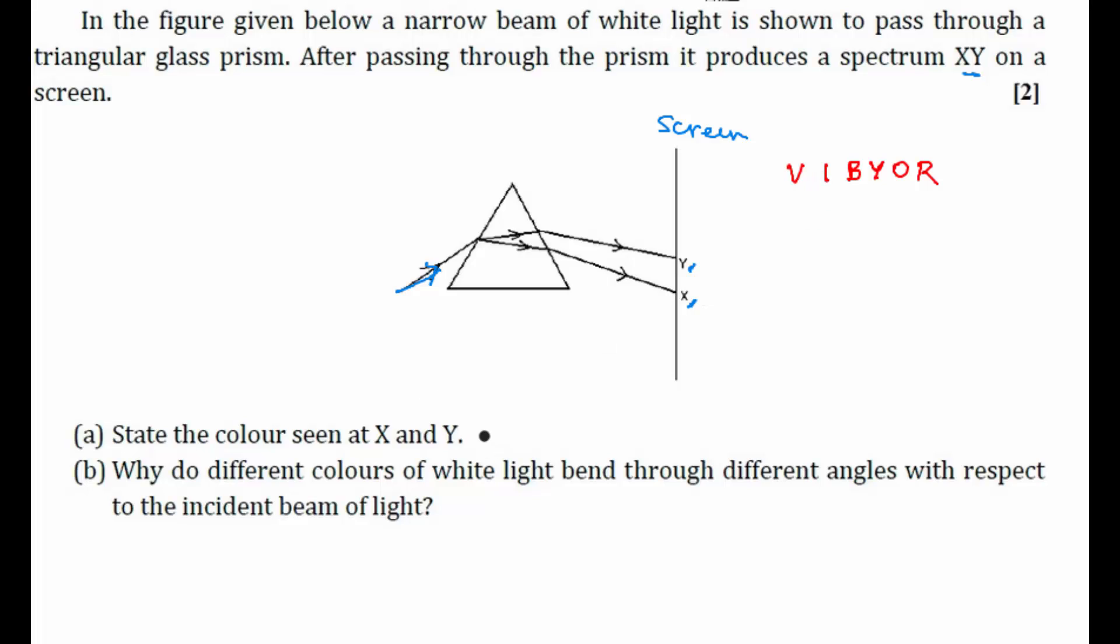Now what are the questions given here? State the color seen at X and at Y. We know that during dispersion, the color which bends more is violet, right? So during dispersion at the bottom, which color we will be getting? Violet.